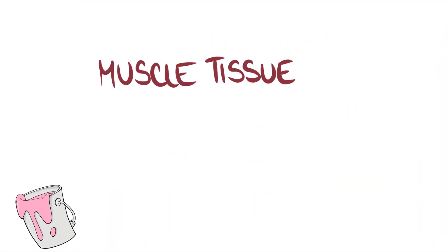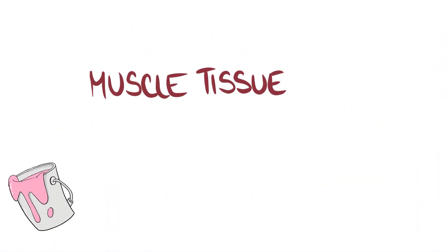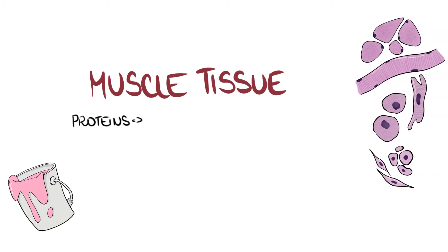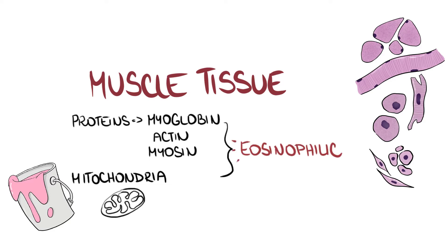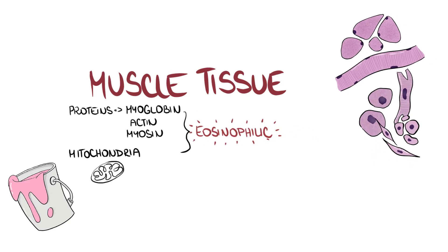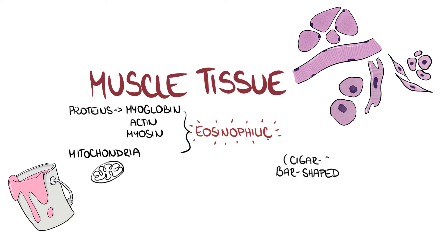Staining properties are rather straightforward. Structures within the muscle elements, such as proteins like myoglobin, actin, and myosin, as well as mitochondria, are eosinophilic — thus muscles are eosinophilic. Muscle elements contain bar-shaped, or so-called cigar-like shaped, nuclei in their cytoplasms.